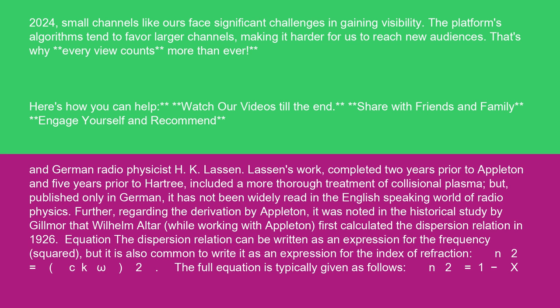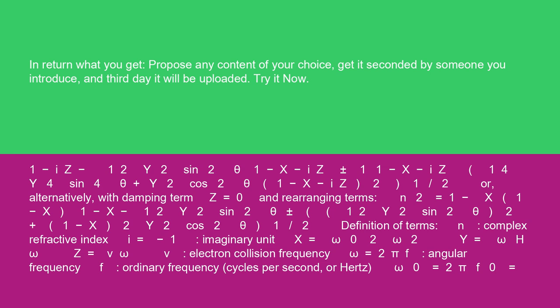n² = 1 - x / (1 - iz - (1/2)y² sin²θ / (1 - x - iz) ± (1 / (1 - x - iz)) [(1/4)y⁴ sin⁴θ + y² cos²θ (1 - x - iz)²]^(1/2))